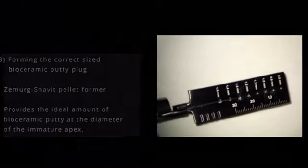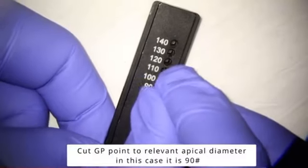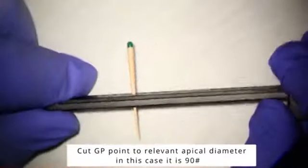To use this instrument correctly, you cut a GP point to the relevant apical diameter. In our case, it's a 90.